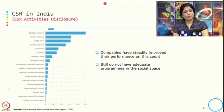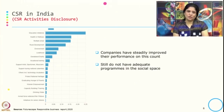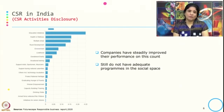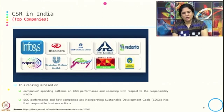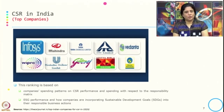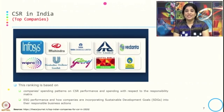Companies have been steadily improving their performance, but you will find they still do not have enough programs in the social space — even if CSR activity is increasing, they do not have adequate programs in social space. This is the top 10 Indian companies in CSR from the CSR Report 2020, and this ranking is based on company spending pattern on CSR performance, spending with respect to the responsibility matrix.